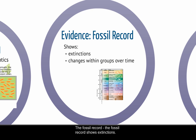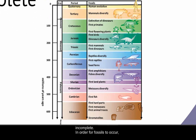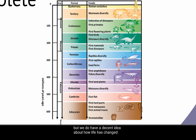The fossil record shows extinctions — species that used to exist on the planet but don't anymore — and it also shows changes within groups over time. It is important to recognize that the fossil record is very incomplete. In order for fossils to form, organisms need to have hard parts, and individuals have to fall into the right conditions of mud and pressure. So we don't have evidence of every species, but we do have a decent picture of how life has changed over the 4.5 billion year history of the planet.